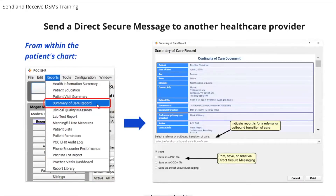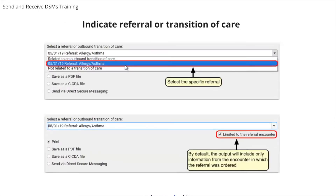Once DSM is enabled for your practice, you will be able to send direct secure messages. To send a summary of care record to a specialist, another pediatrician, or another health care provider, first open the patient's chart. Select Summary of Care Record from the reports menu. On the reports criteria screen, you need to indicate whether you are creating the record for a referral or a transition of care. You may also select a specific encounter and limit the record you send to information from that particular encounter. Choose the specific referral order from the selection pull-down menu.